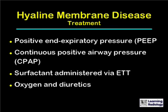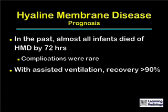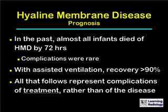Treatment for hyaline membrane disease consists of positive end-expiratory pressure or continuous positive airway pressure. Sometimes surfactant is administered via the endotracheal tube, and oxygen and diuretics are sometimes used. In the past, almost all infants died of hyaline membrane disease by 72 hours, and complications were rare. With assisted ventilation, recovery is in excess of 90%. All that follows represents complications of treatment rather than manifestations of the disease itself.